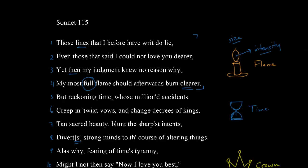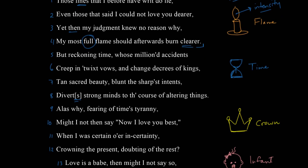Let's go to the next quatrain, where he talks about time. These four lines are very tricky. Part of the problem is all the verbs: creep, change, tan, blunt, and divert. But what is doing the action of these verbs — is it time or is it accidents? Accidents are events, the things that happen over time. The word 'accident' literally means something that befalls. 'Millioned' here means numerous, and 'reckoning' means counting or judging — that sense of time.